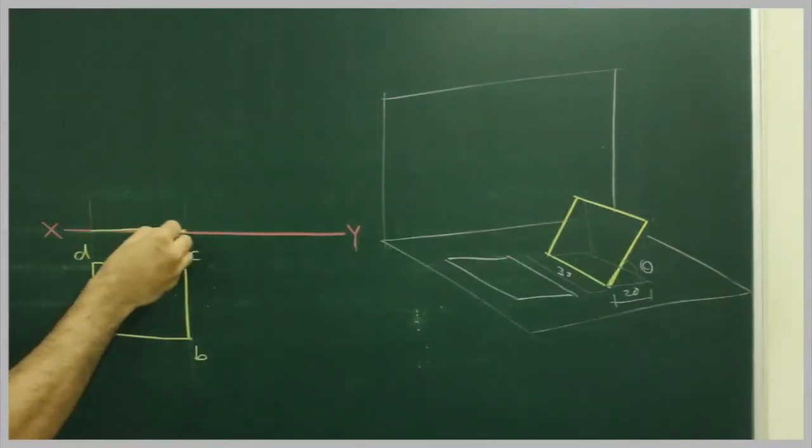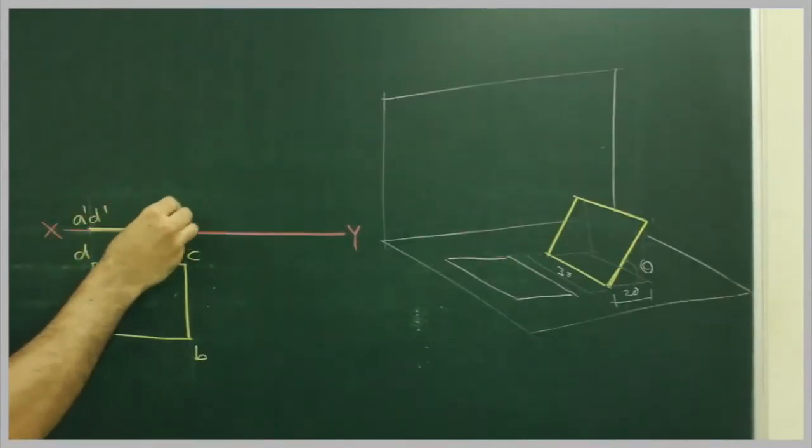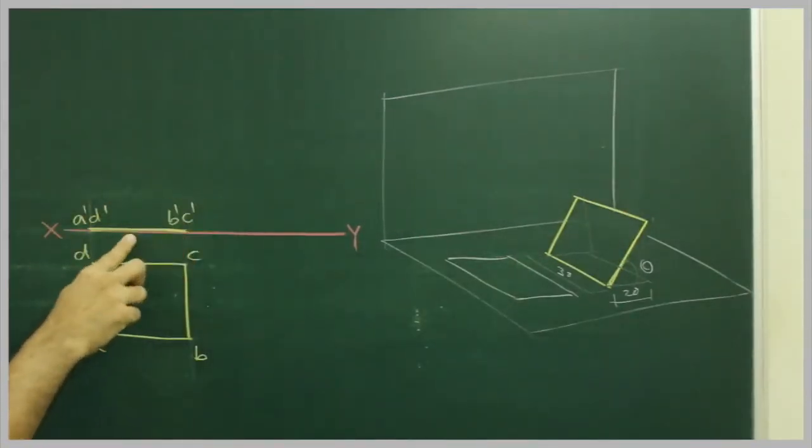This is the front line, A dash, B dash, C dash. This is reference line.